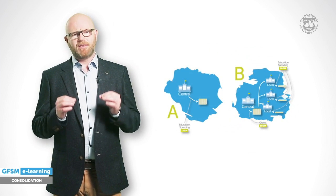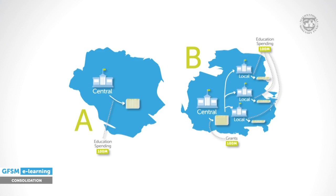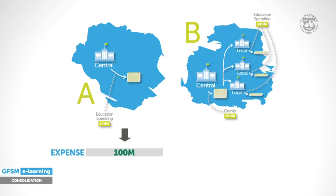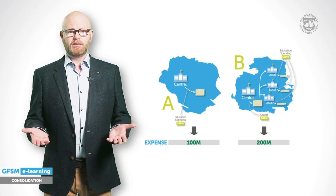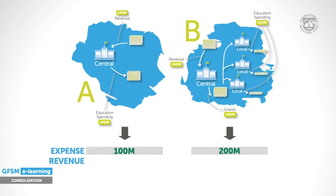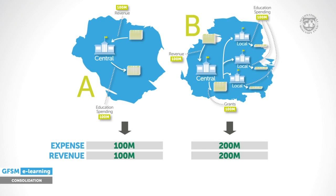How can fiscal activities in these countries best be compared? We could compare total government expenses in both countries by simply adding up the expense of each level of government. Country A would then present a lower level of government expense than country B, because country A would show only the spending by the central government, while the total expense in country B would include both the transfers paid by the central government and the education expense paid at the local level. The same is true for revenue. This is not because the level of fiscal activity is different in these countries, but rather the interaction with the rest of the economy takes place at different levels of government.